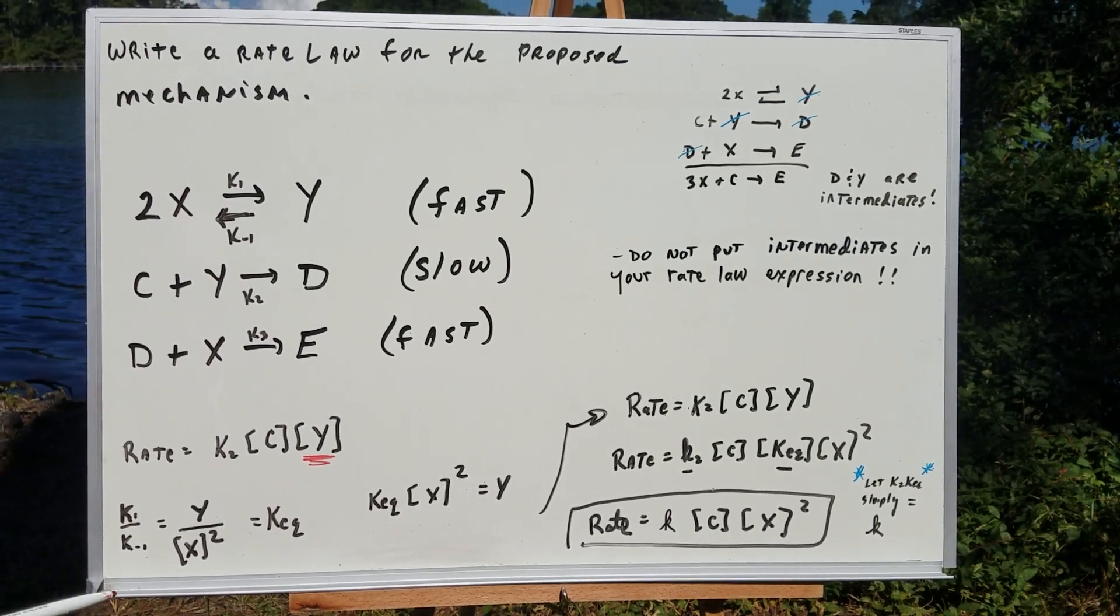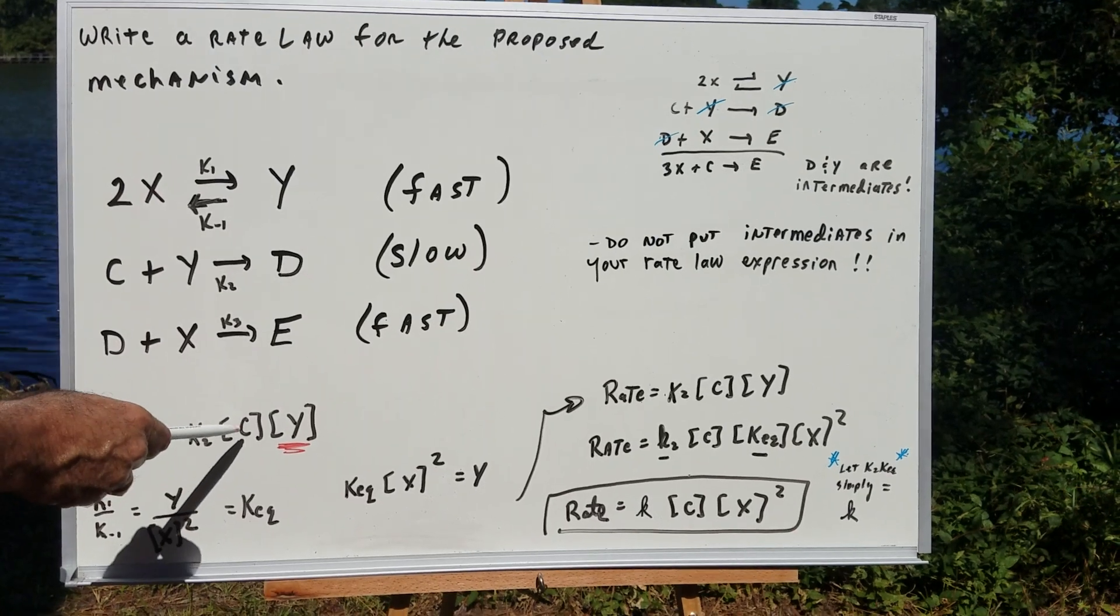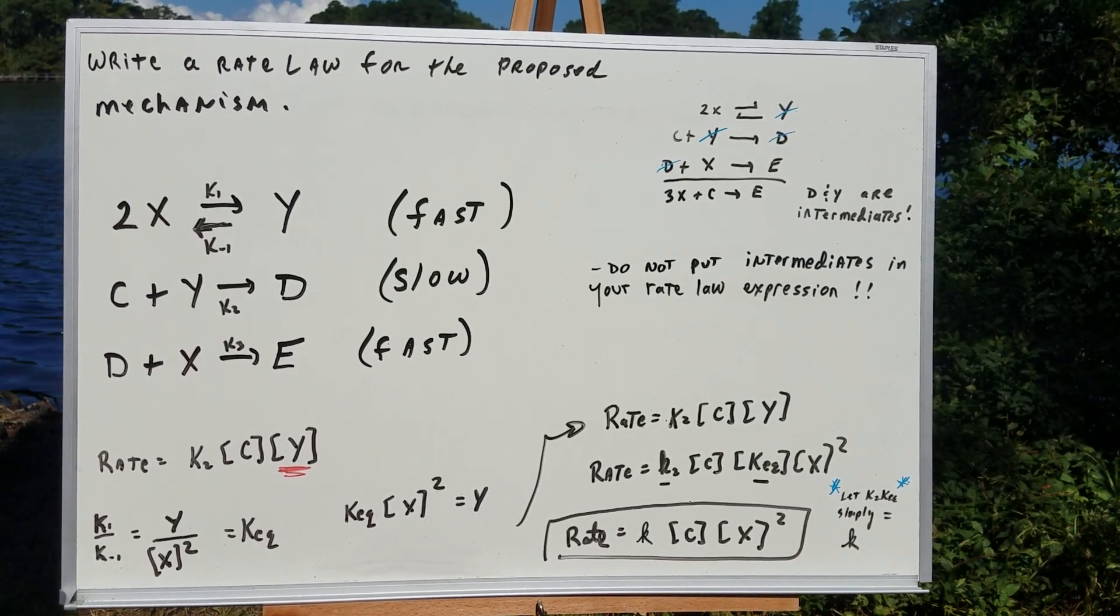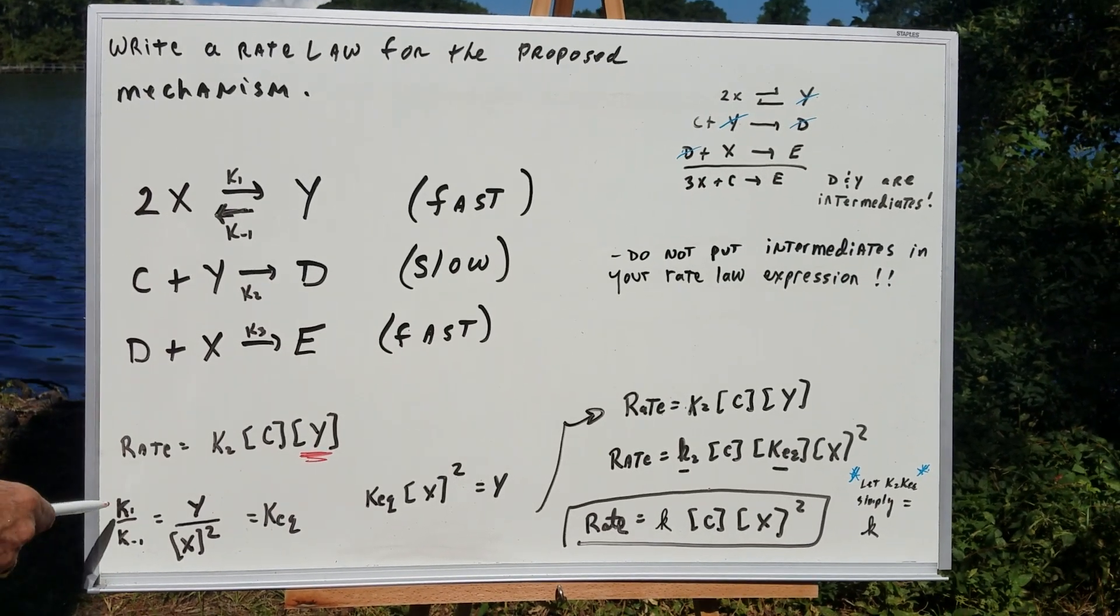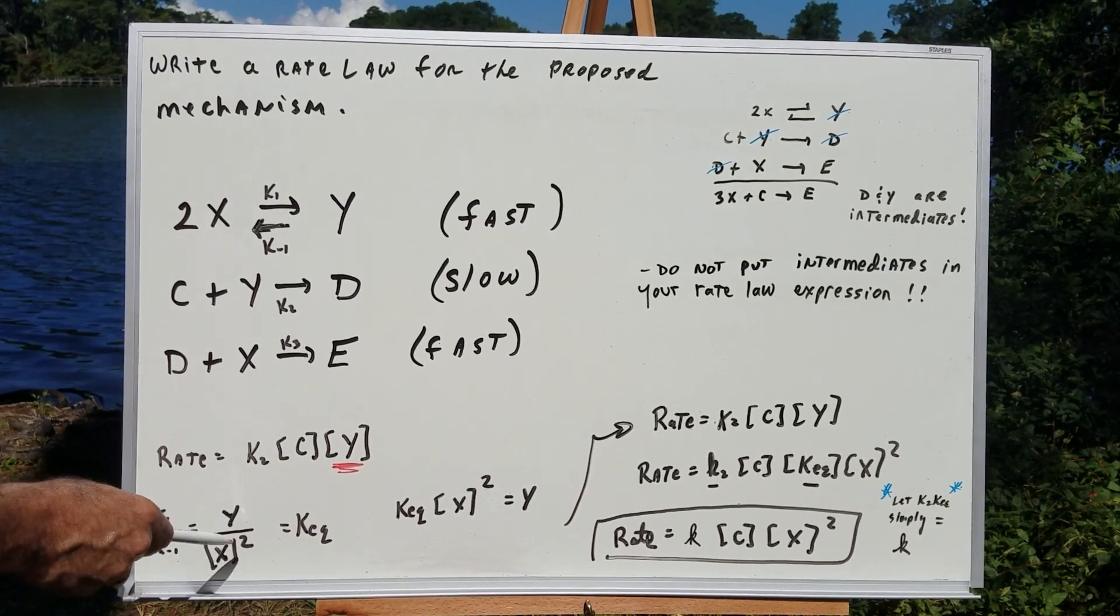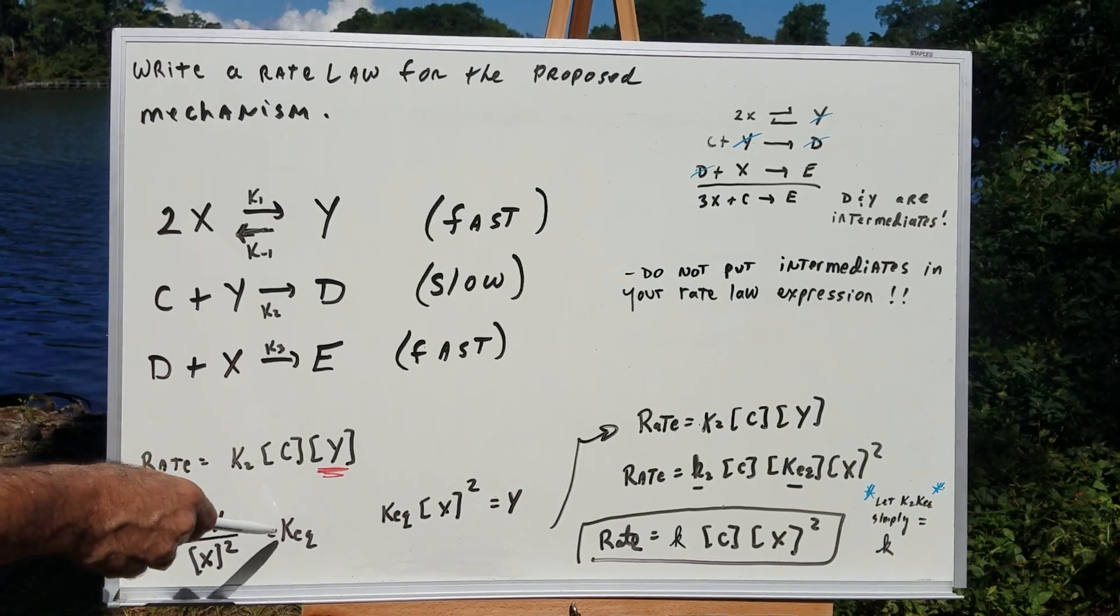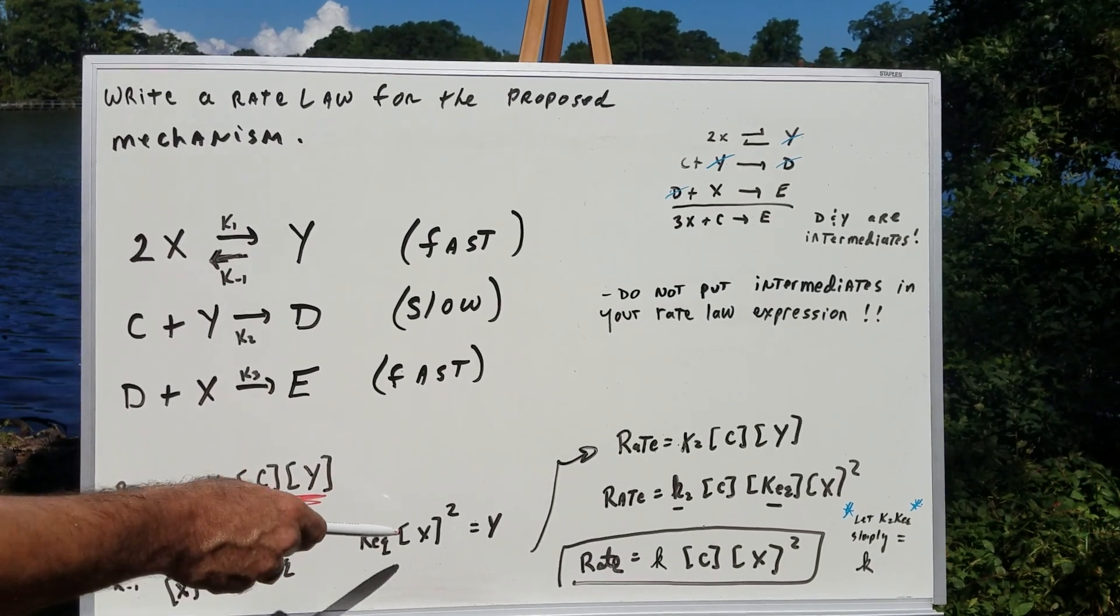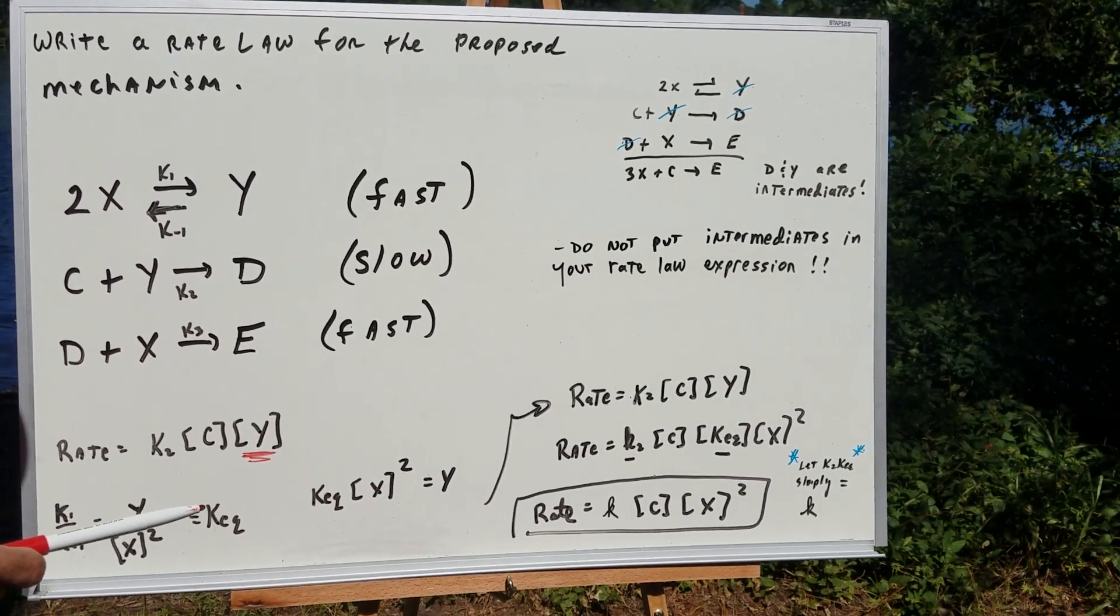So what we're going to do is we know we need either X or C in the rate law. Well, we have C, so we need X. You go to the fast equilibrium step, and I'm going to say that the KEQ of that step, which is really the K1 divided by K minus 1, is the products over the reactants, which is Y over X squared. Cross-multiplying, we get KEQ times X squared is Y. We now have something to substitute for Y.